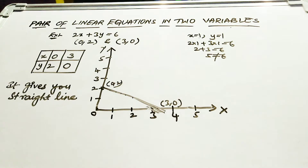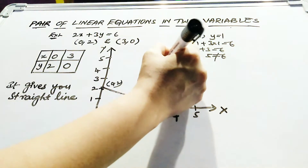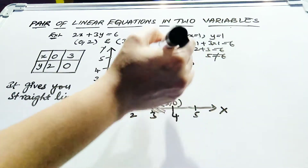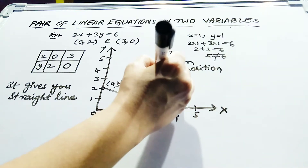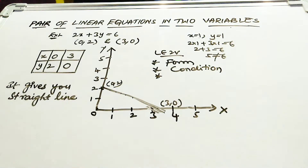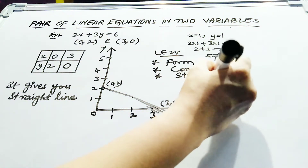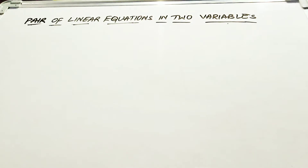Let us do a recap of what we learned. We discussed the form of a linear equation in 2 variables and the conditions it must satisfy. Then we discussed the number of solutions. Whenever you use a graph to solve a linear equation, you will get a straight line, and all solutions of an equation lie on the straight line produced by the linear equation in 2 variables.